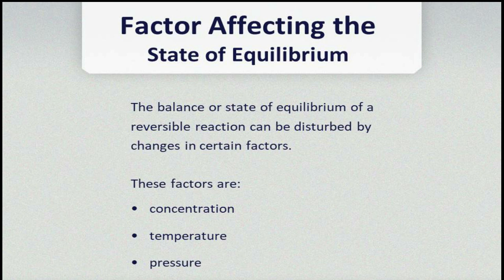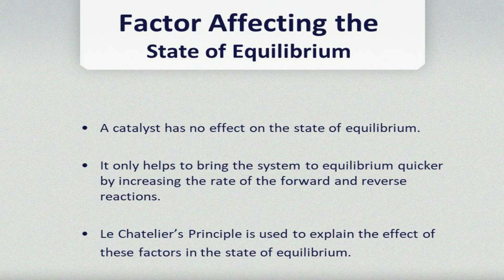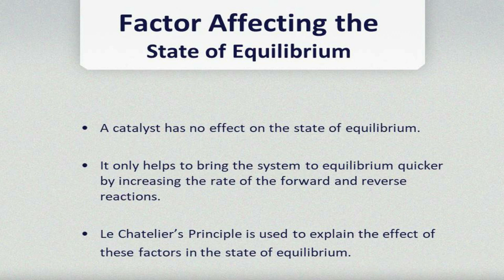The factors we are going to look at: number one is concentration, number two is temperature, number three is pressure, and we can also talk about a catalyst. Let's look at the catalyst first and say how does it affect the state of equilibrium. A catalyst has no effect on the state of equilibrium — whenever we introduce a catalyst into a reaction, the state of equilibrium is not affected by the catalyst.